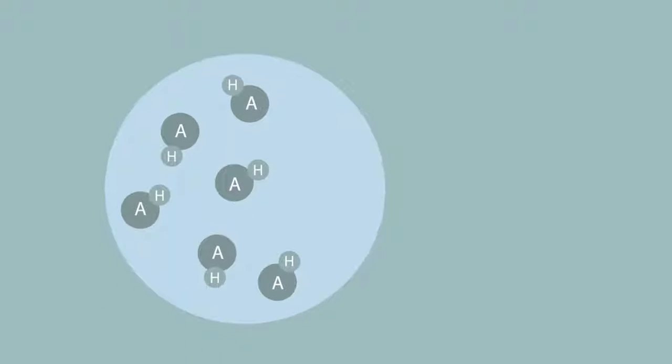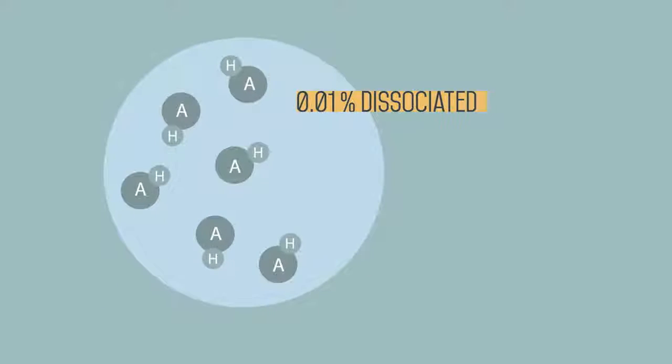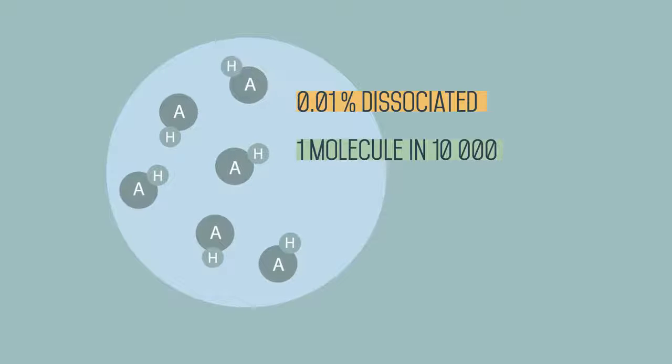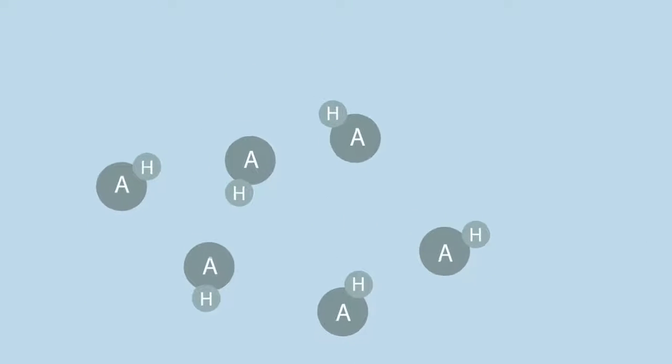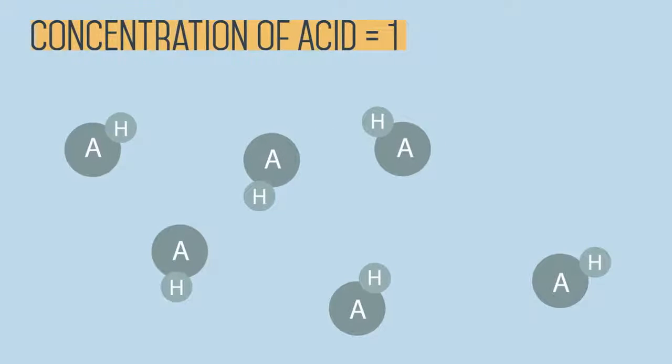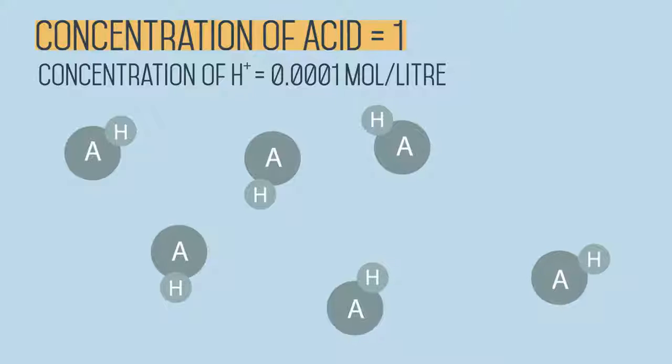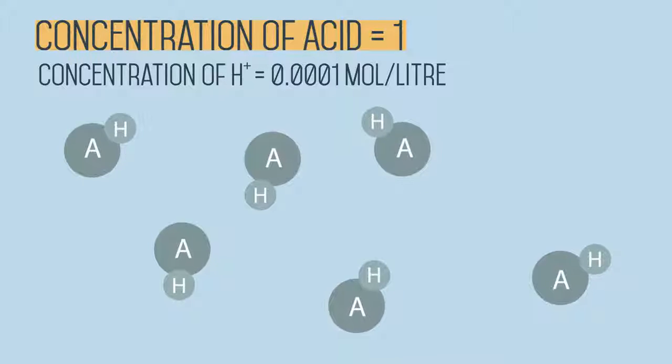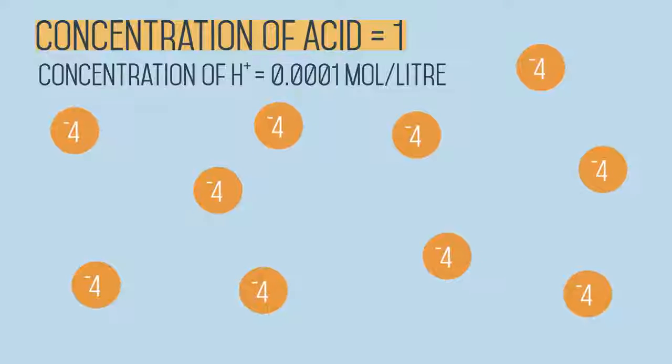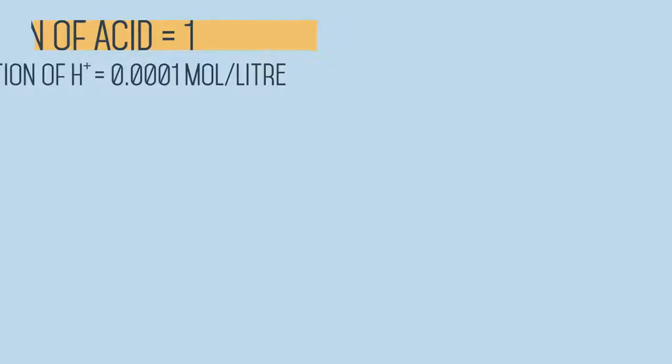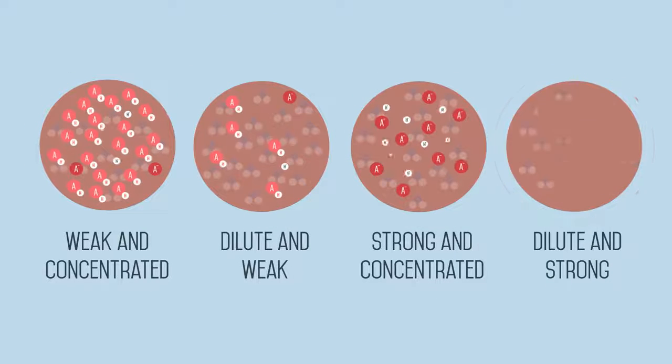Let's say the acid is only 0.01% dissociated. So only one molecule in 10,000 are split into ions. Although the concentration of the acid is 1 mole per litre, the concentration of hydrogen ions is only 0.0001 moles per litre. That is 10 to the power negative 4 making the pH 4. So here is an example of a fairly concentrated acid which is weak.